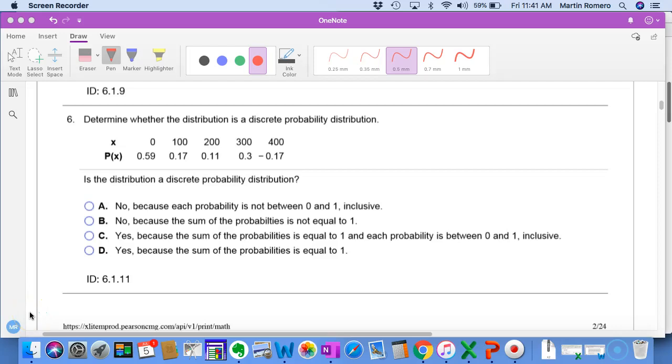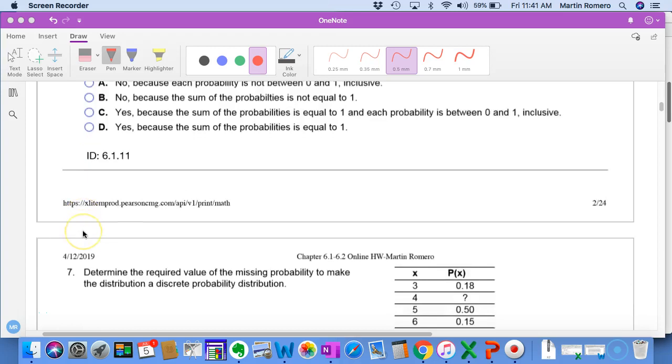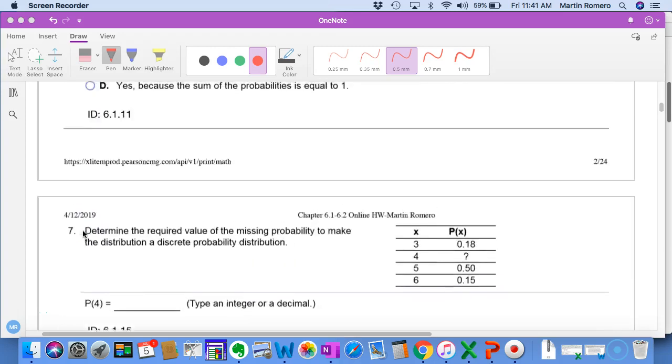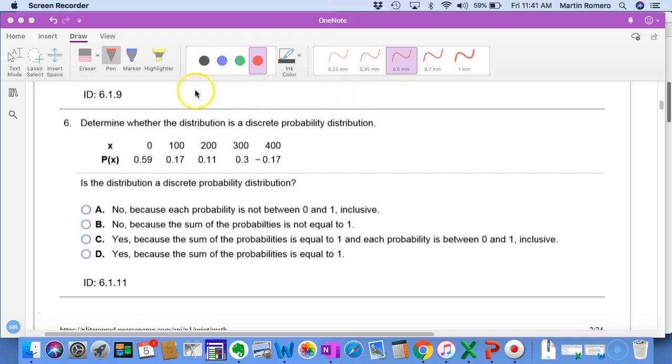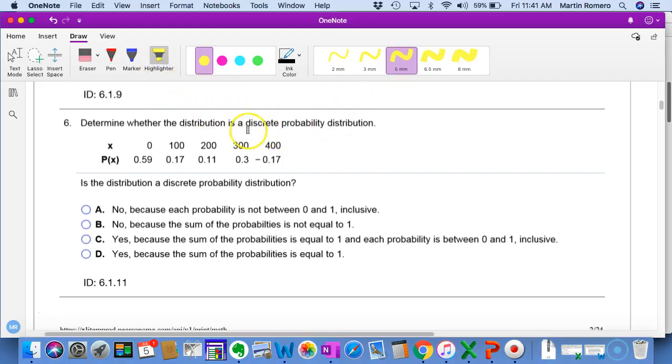Let's take a look at chapter 6.1.11 and 6.1.15. The first idea here is a probability distribution, so looking at a discrete probability distribution in this sense, we have the probability of some outcome.